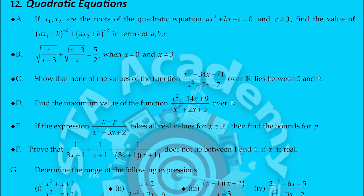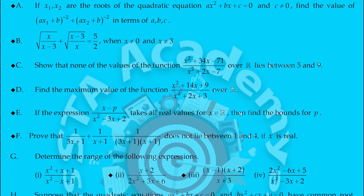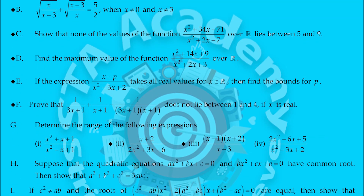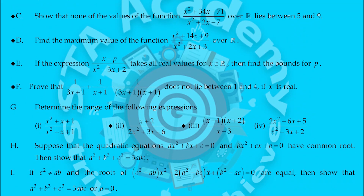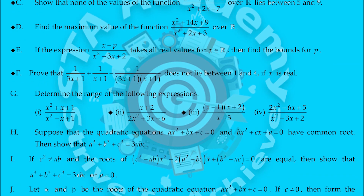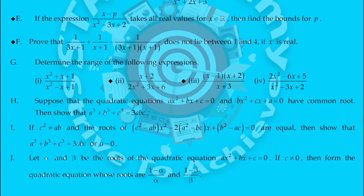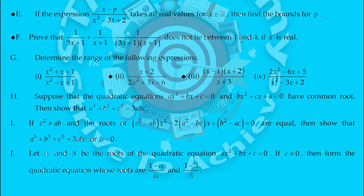Let us go to the next chapter, quadratic equations. A to I I have given, with important questions marked. The first question: if x1, x2 are the roots of the quadratic equation Ax² + Bx + C = 0 where C ≠ 0, find the value of (Ax1 + B)⁻² + (Ax2 + B)⁻² in terms of A, B, and C. If the expression takes all real values, question E1 is a mostly asked question. Question F — it doesn't lie between 1 and 4 — is also mostly asked. Practice these discussions to get four marks from quadratic equations.